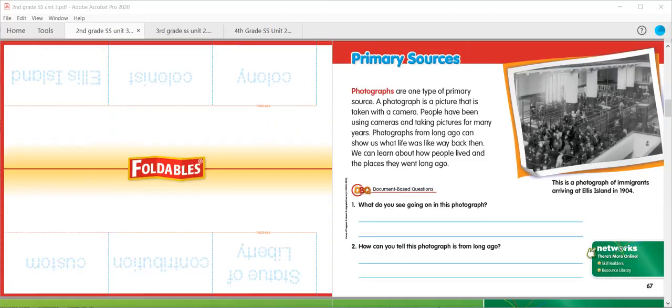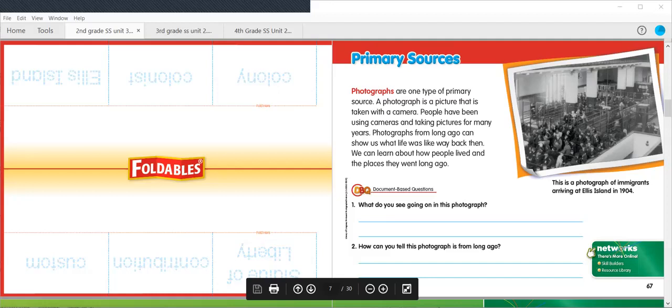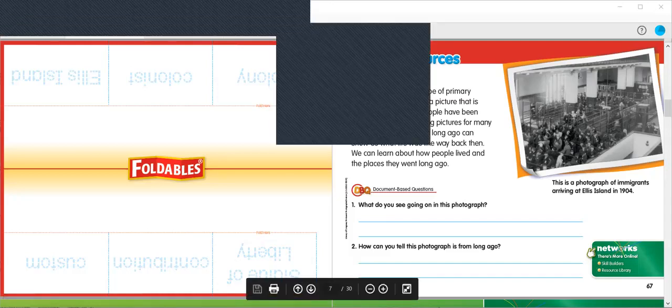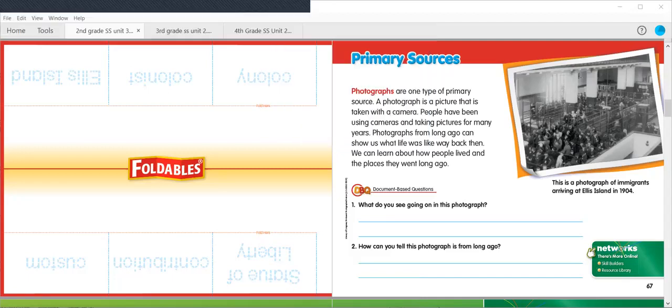And now, we're going to talk about our primary sources, which are photographs. Photographs are one type of primary source. A photograph is a picture that is taken with a camera. People have been using cameras and taking pictures for many years. Photographs from long ago can show us what life was like way back then. We can learn about how people lived and the places they went long ago. To learn and practice the primary source skill, click on the Skill Builders icon.